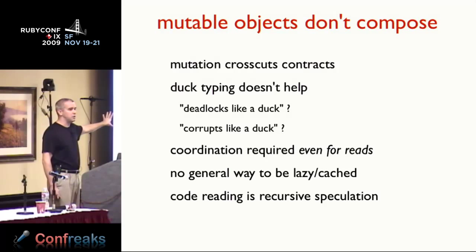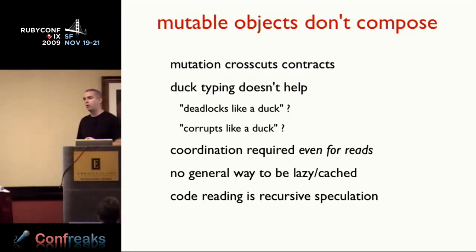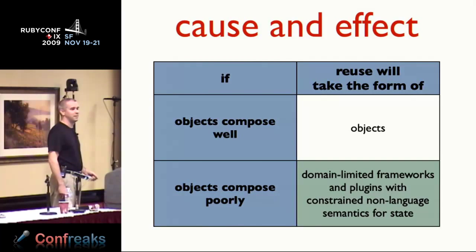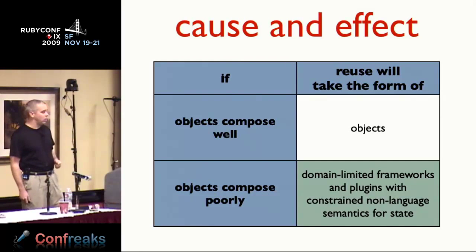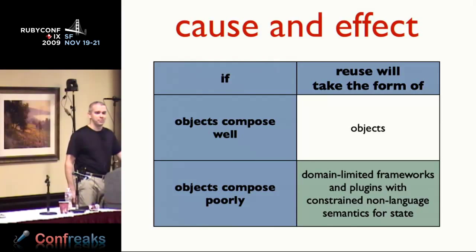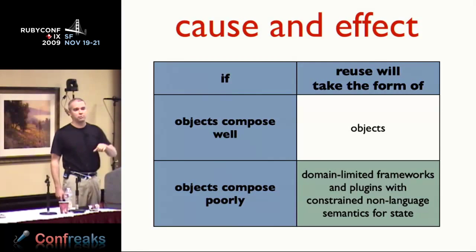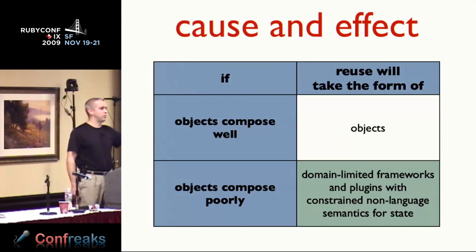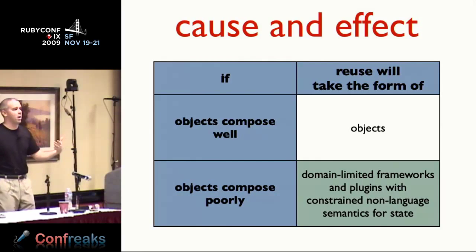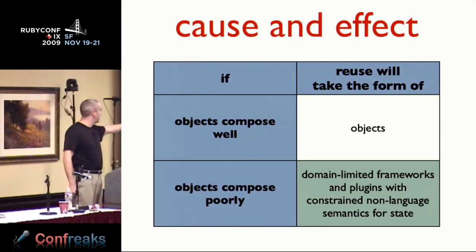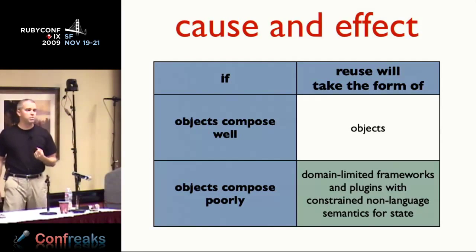Let me pose a challenge: what would reuse look like if mutable objects composed well? If they compose well, reuse would just be objects — that's the whole point. But if they don't compose well, then we end up with domain-limited frameworks and plugins with constrained non-language semantics for state. The way we deal with mutation and concurrency doesn't work at the language level, so we write frameworks — web frameworks, messaging frameworks — and inside those frameworks you have constrained concurrency semantics. It should be a smell that every framework we build says 'don't use the concurrency primitives built into the language.'